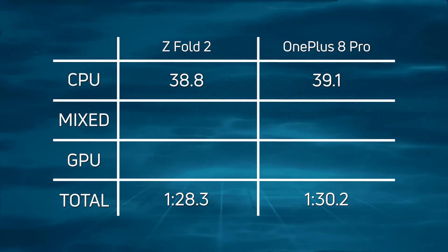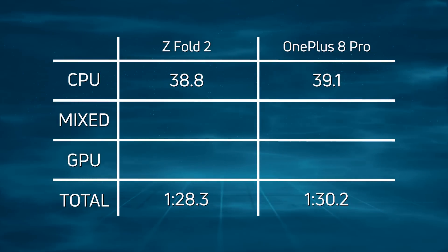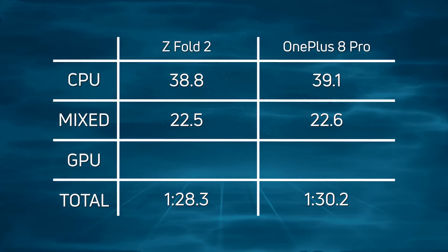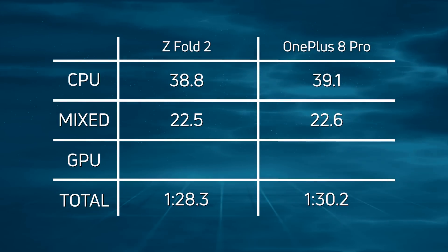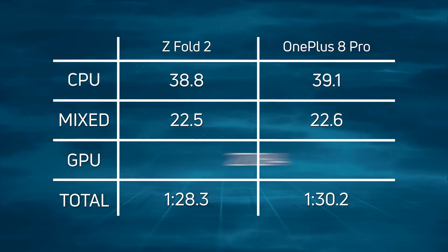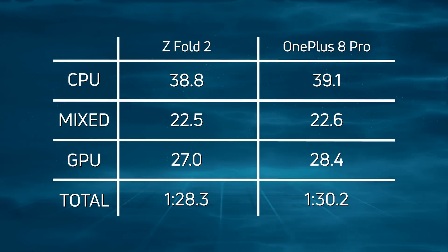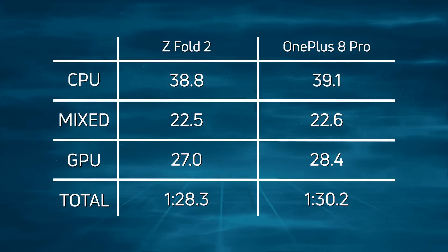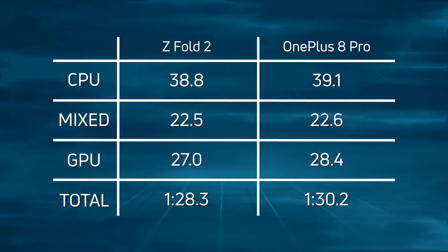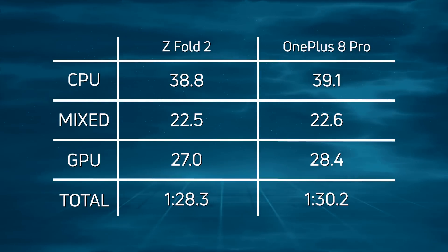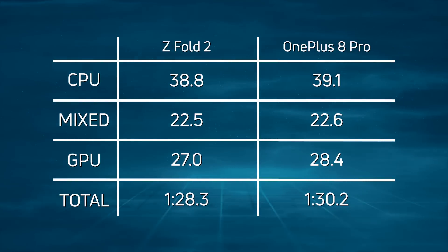Breaking down the scores: CPU was very very close — 38.8 versus 39.1 seconds, a difference of just 0.3 seconds. In the mixed CPU-GPU section, again very very close — 22.5 versus 22.6 seconds, only 0.1 of a second. The real difference came in the GPU section: 27 seconds for the Z Fold 2 versus 28.4 seconds for the OnePlus 8 Pro — a difference of 1.4 seconds. Adding up all those wins for the Z Fold 2 still gives a total win.